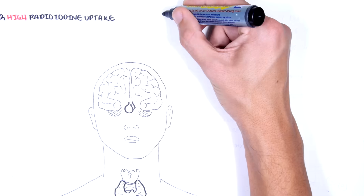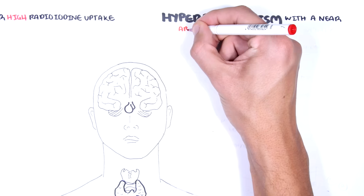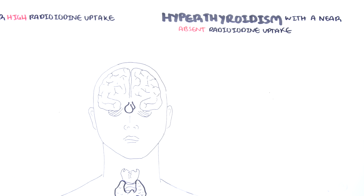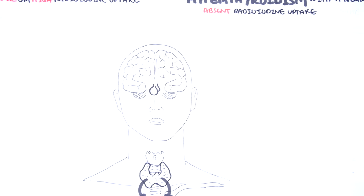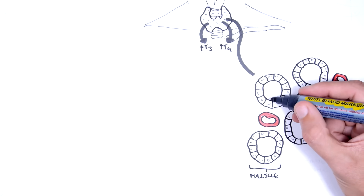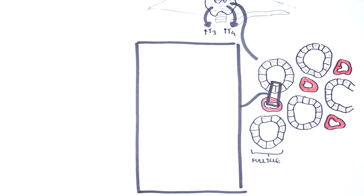The other group is hyperthyroidism with near-absent radioiodine uptake, meaning that hyperthyroidism is not a result of increased synthesis of thyroid hormones. Let us first focus on hyperthyroidism where there is an increase in thyroid hormone synthesis and production.